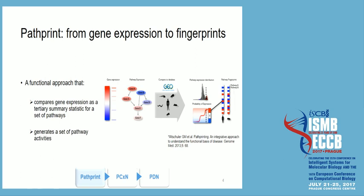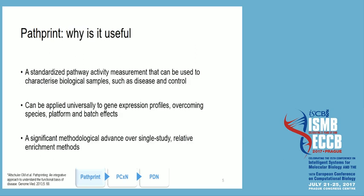This is given to you in the form of a tertiary summary statistic, and you have, at the end, the pathway fingerprint, which gives you the idea of how pathways are related activity-wise. If you have to remember one thing about Pathprint, it's that ultimately it generates a set of pathway activities.